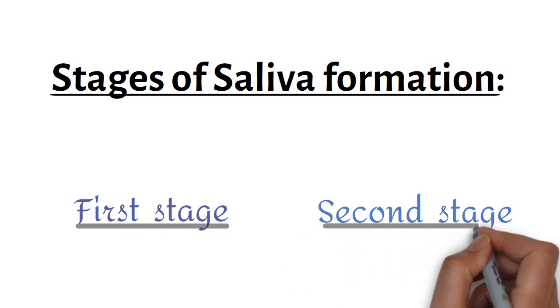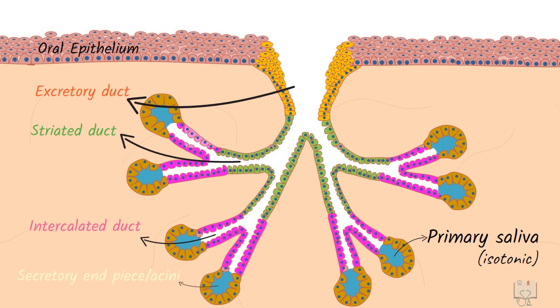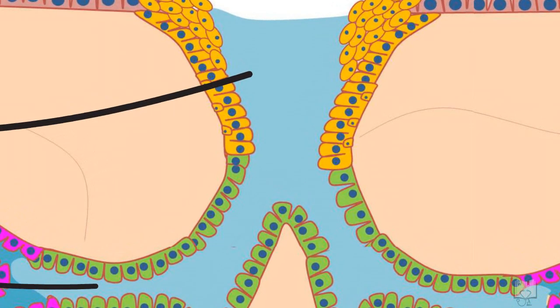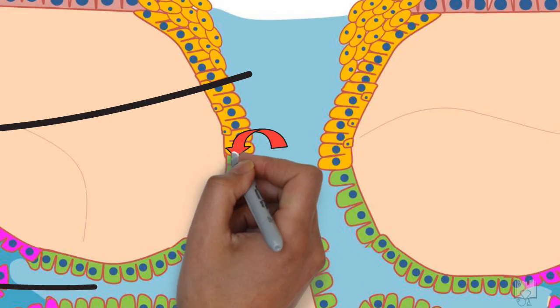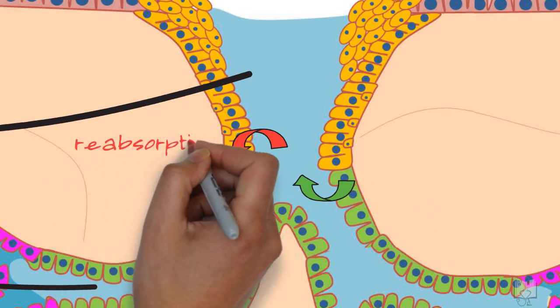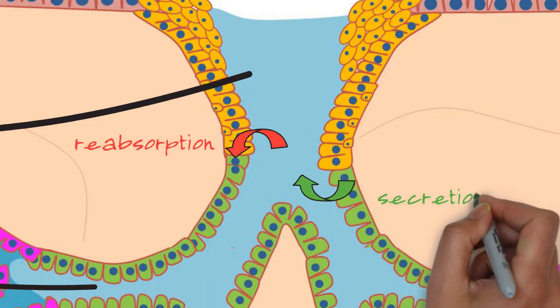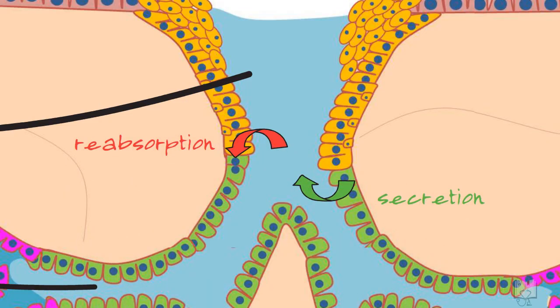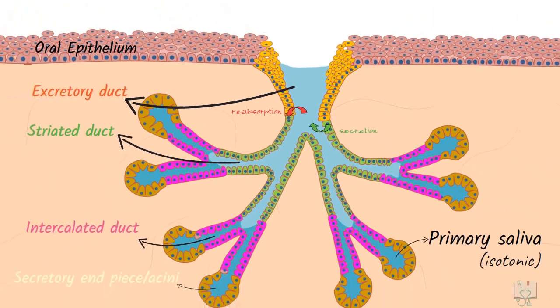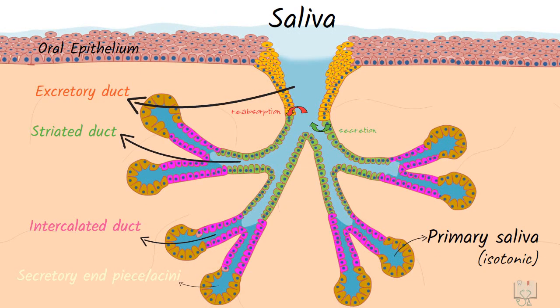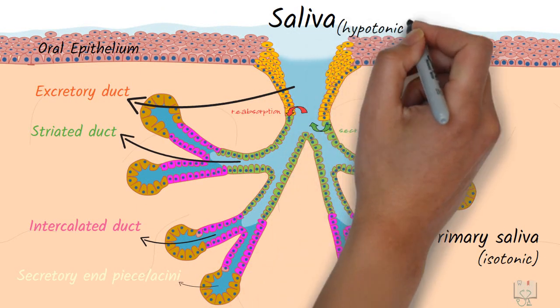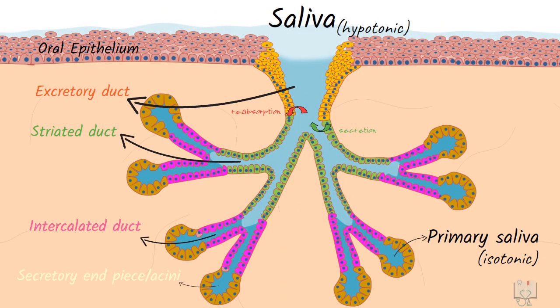In the second stage, as this saliva travels through the duct system — through striated ducts and excretory ducts — it gets modified mainly by reabsorption and secretion of electrolytes, such that the final saliva that reaches the oral cavity is hypotonic.